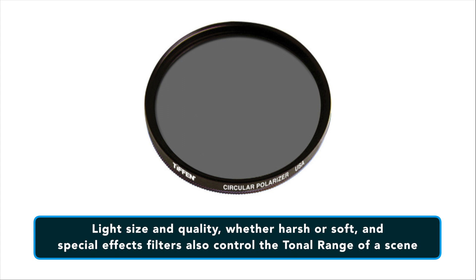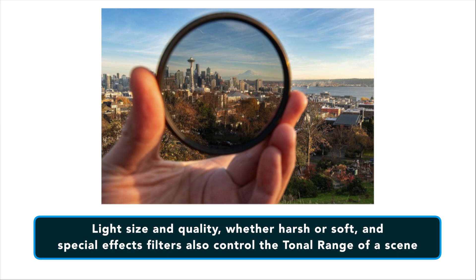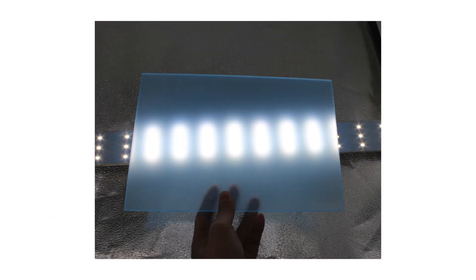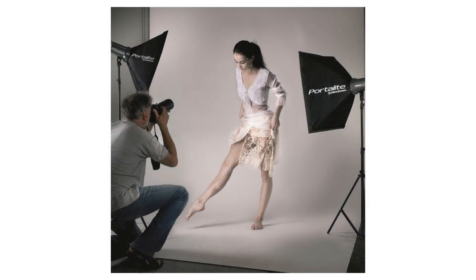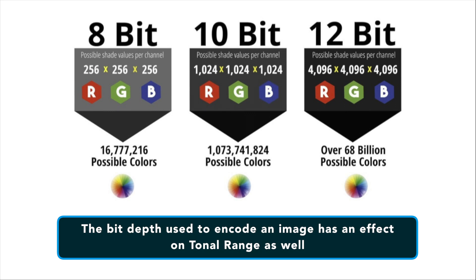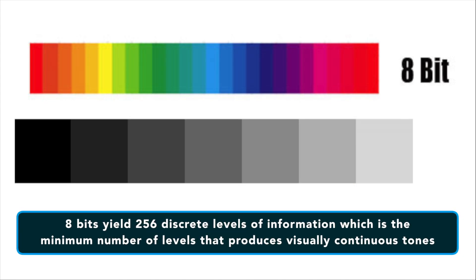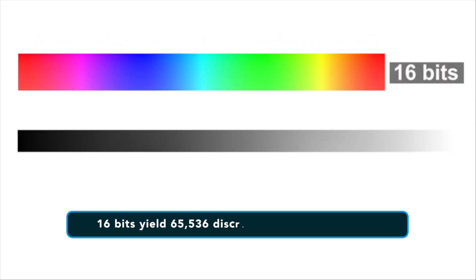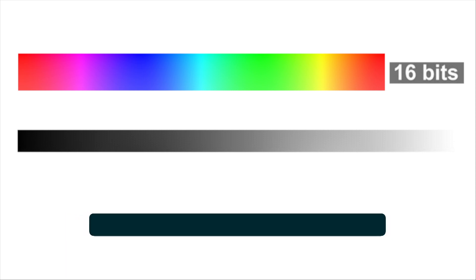Special effect filters, such as polarizing filters, are known to increase color vibrancy and expand the tonal range. Diffusers and similar light control equipment lessen contrast, thus reducing the overall tonal range. The bit depth used to encode an image has an effect on the tonal range of that image. Eight bits yield 256 discrete levels of information, which is the minimum number of levels that produces visually continuous tones, while 16 bits yields 65,536 discrete levels of information and thus a better tonal range.